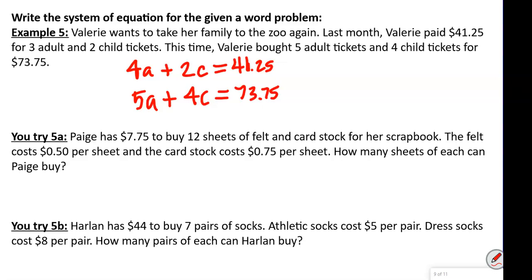Paige has $7.75 to buy 12 sheets of felt and cardstock for her scrapbook. The felt costs 50 cents per sheet and the cardstock costs 75 cents per sheet. Let's talk money first: 0.5 times felt plus 0.75 times cardstock equals $7.75.